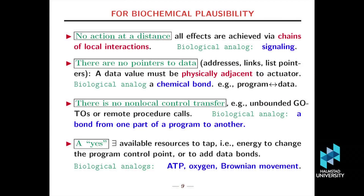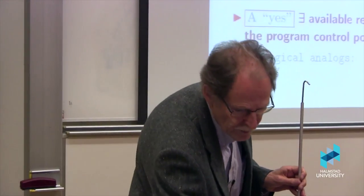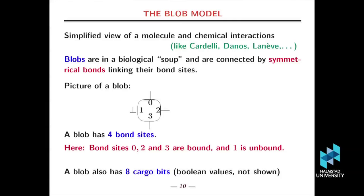Biological computation, in the biological world, things happen with physical contact. You don't have pointers. You don't have action at a distance. And we need some kind of workaround for these if we want even to talk about biological computing. There should be no action at a distance, no pointers to data, no non-local control transfer. However, there is a yes, that there are available resources to tap. There's energy to change a program control point to add bonds between data. And the biological analogs are ATP, which apparently is a method for transporting energy from one part of a cell to another. Oxygen is where a lot of it comes from. And even Brownian movement at some low level can be exploited.